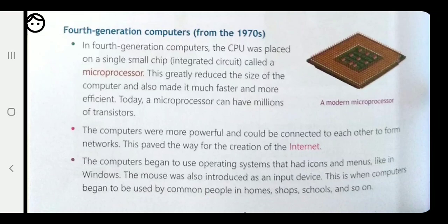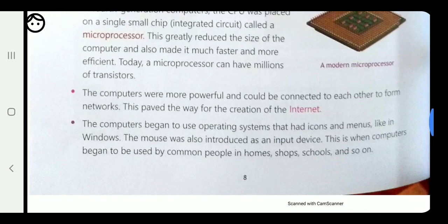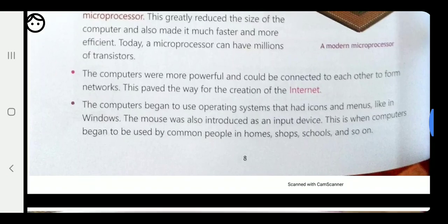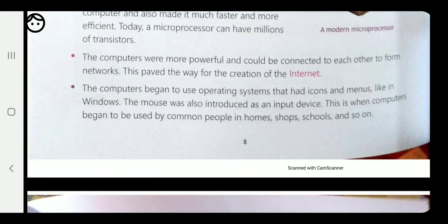Today a microprocessor can have millions of transistors — the microprocessor picture is shown here. The computers were more powerful and could be connected to each other to form networks. This paved the way for the creation of the internet. Computers began to use operating systems that had icons and menus, like in Windows. The mouse was also introduced as an input device.